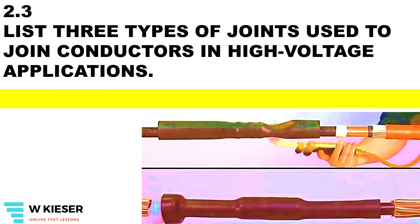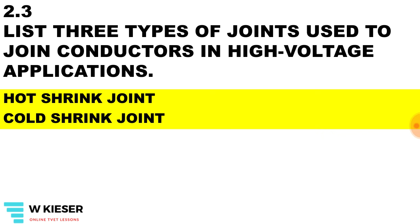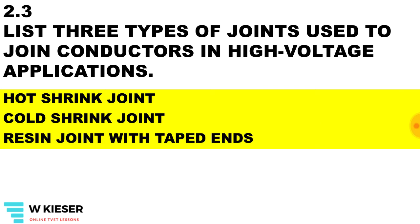List three types of joints used to join conductors in high voltage applications. We get hot shrink joint, cold shrink joint, and resin joint with taped ends.